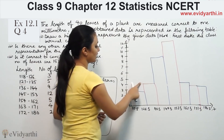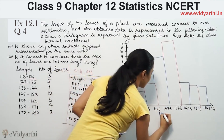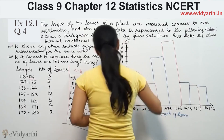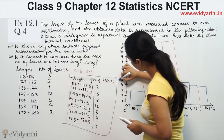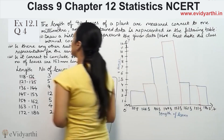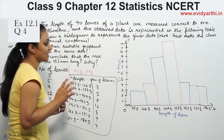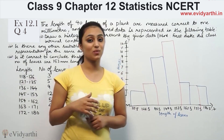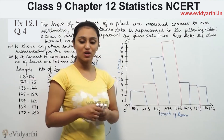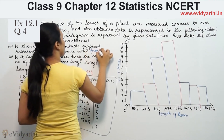The second question asks: is there any other suitable graphical representation for the same data? Yes, a frequency polygon can represent this data. A frequency polygon is drawn by simply joining the midpoints of the tops of the histogram bars.